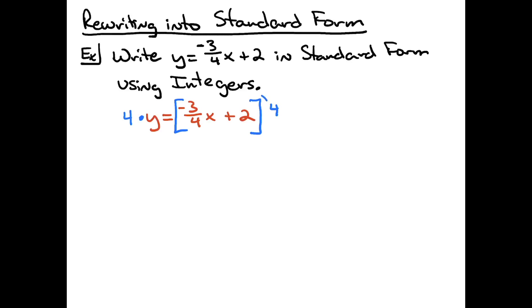That four on the right-hand side needs to be distributed to both terms on the inside. When I take negative three-fourths times the four, the fours are going to cross out. That's going to leave me on the right-hand side with negative three-x. Then I'm going to have the plus sign — I'll distribute the four to the two. Four times two is eight. On the left-hand side, four times y gives me four-y.